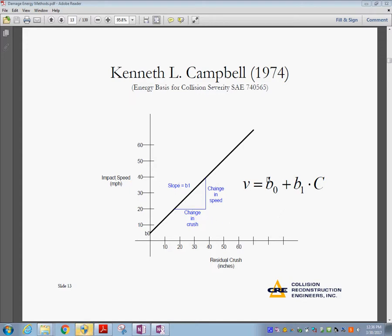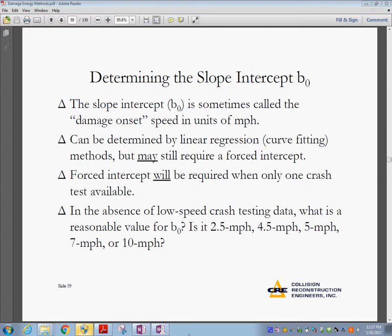These are the coefficients we are talking about. V0 is the intercept — the damage onset — because before that point there is no permanent damage. V1 is the slope of this curve. The slope-intercept V0 is called the damage onset and can be determined by linear regression. If you can fit the data into the form of that line, you can determine the values of the coefficients.